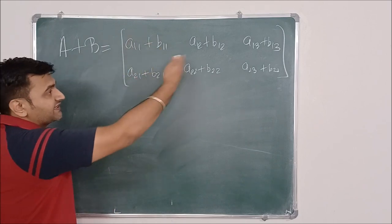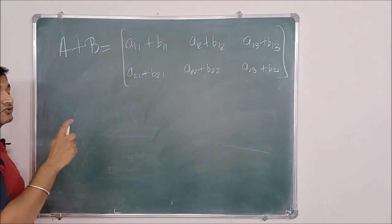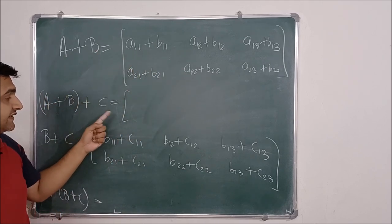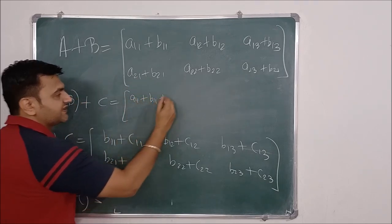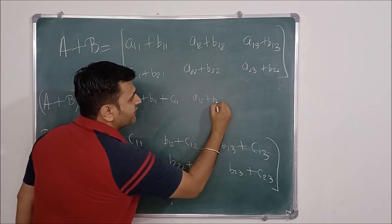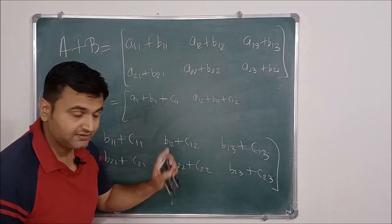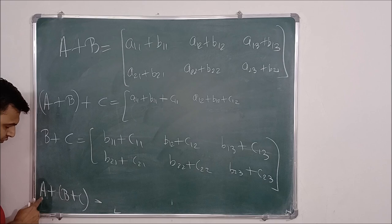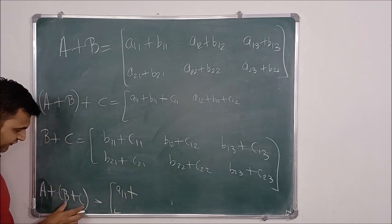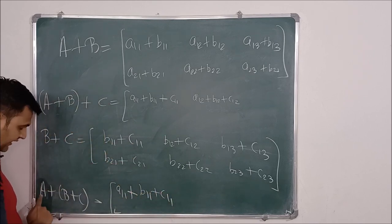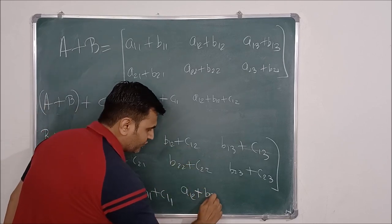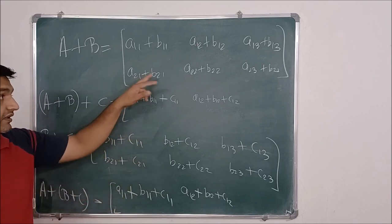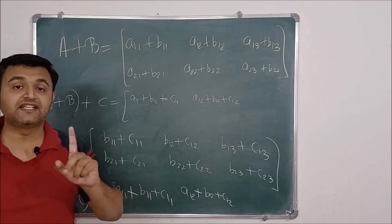Let's check one by one. First property — closure — is clear: the addition of two 2×3 matrices is again a 2×3 matrix. For associativity, (A+B)+C has first entry A11+B11+C11, and A+(B+C) also gives A11+B11+C11, and you can verify all entries match — so associativity is satisfied.